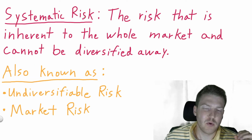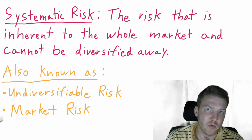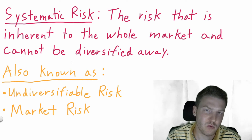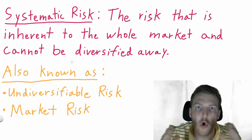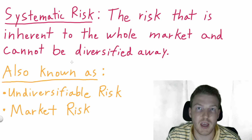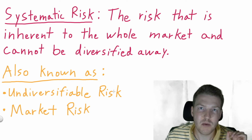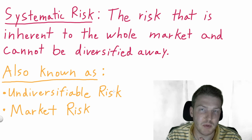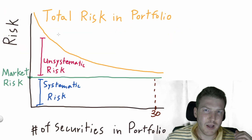Systematic risk, on the other hand, is the risk that is inherent to the whole market and cannot be diversified away. Unsystematic risk would be the risk you have if you purchase just shares in Coca-Cola — risk specific to that one company. Systematic risk would be what you have if you invest in an S&P 500 index ETF — you're investing in the whole market, and the risk you're exposed to is the risk that something happens to the entire stock market. That's why systematic risk is also known as the undiversifiable risk, or market risk, because it cannot be diversified away.